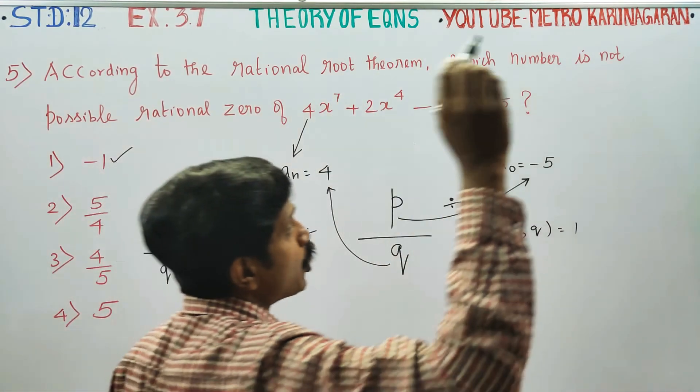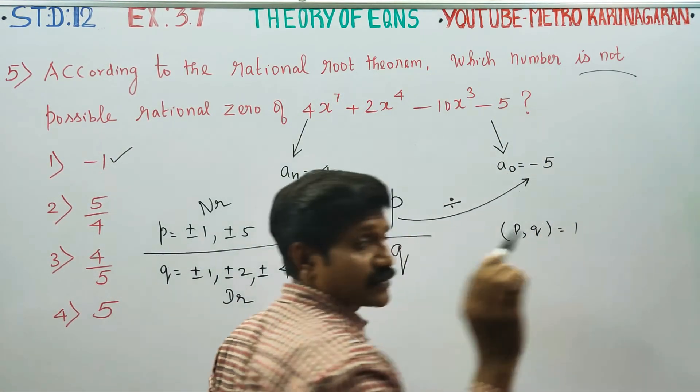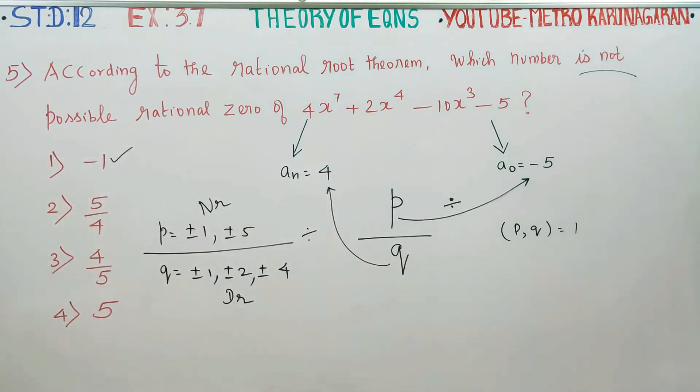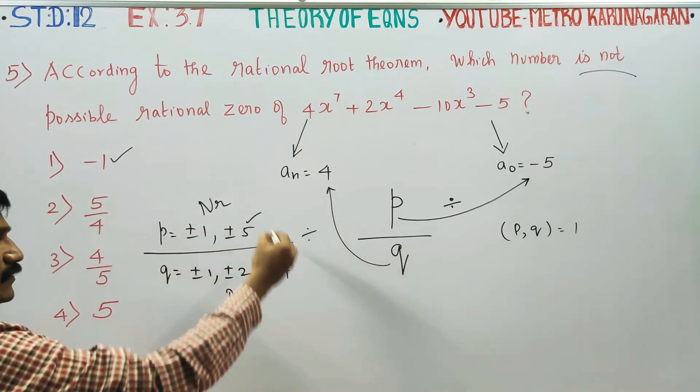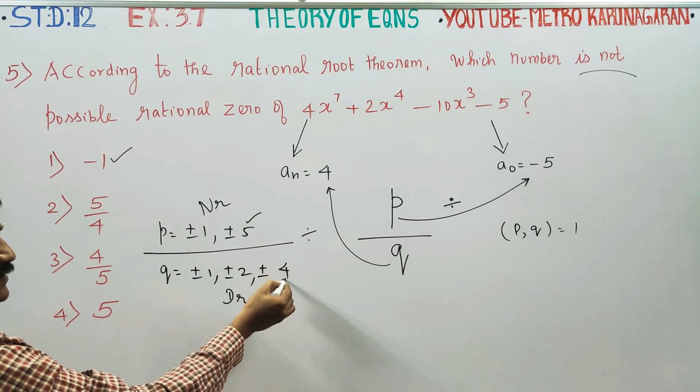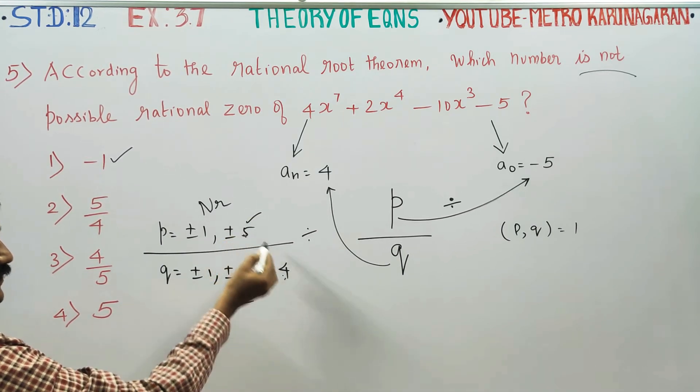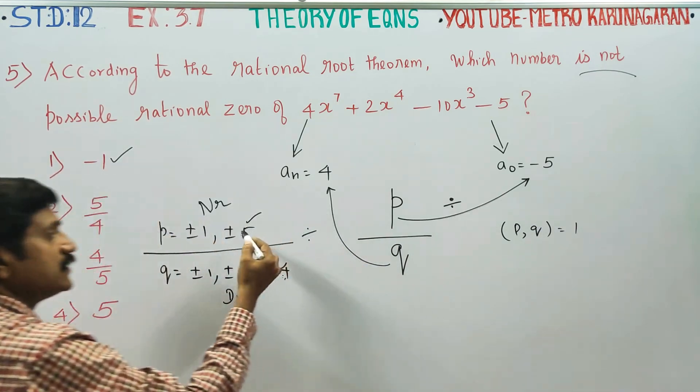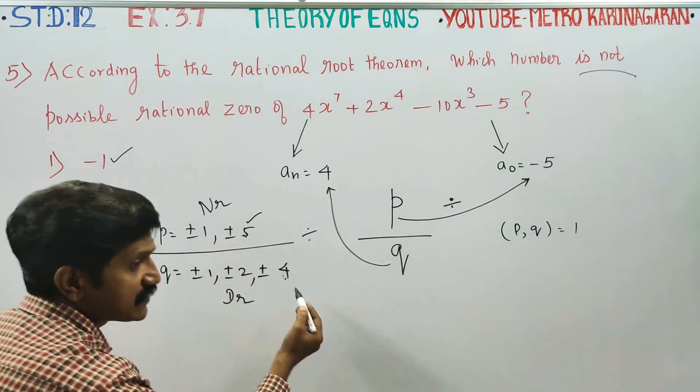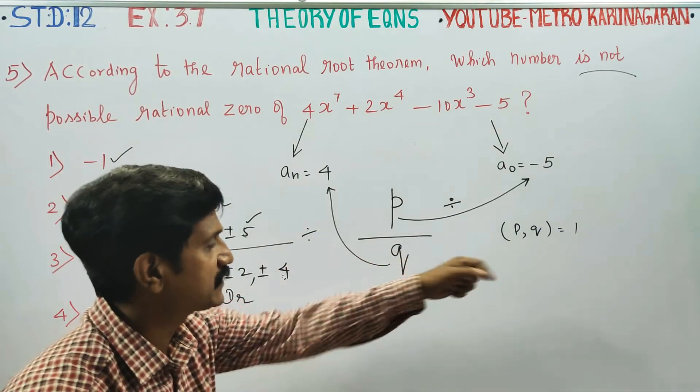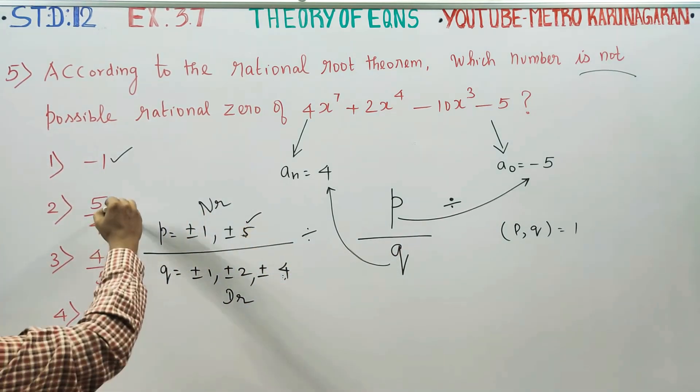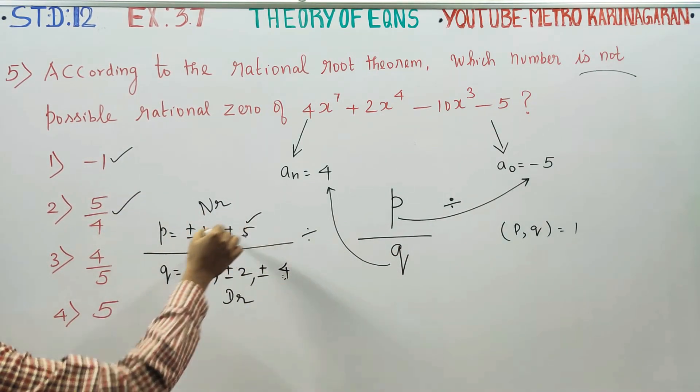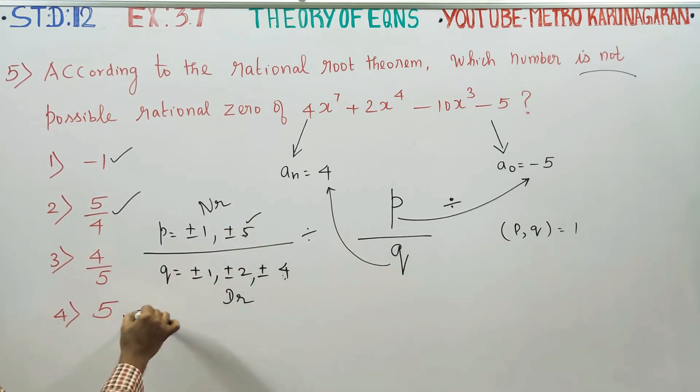Which number is not the answer? 5 by 4 will be the answer because if you take HCF, they are coprimes - HCF is just 1. Any number will not divide 5 as well as 4; only 1 will divide. Therefore, 5 by 4 is allowed. Then 5 by 1 is 5.